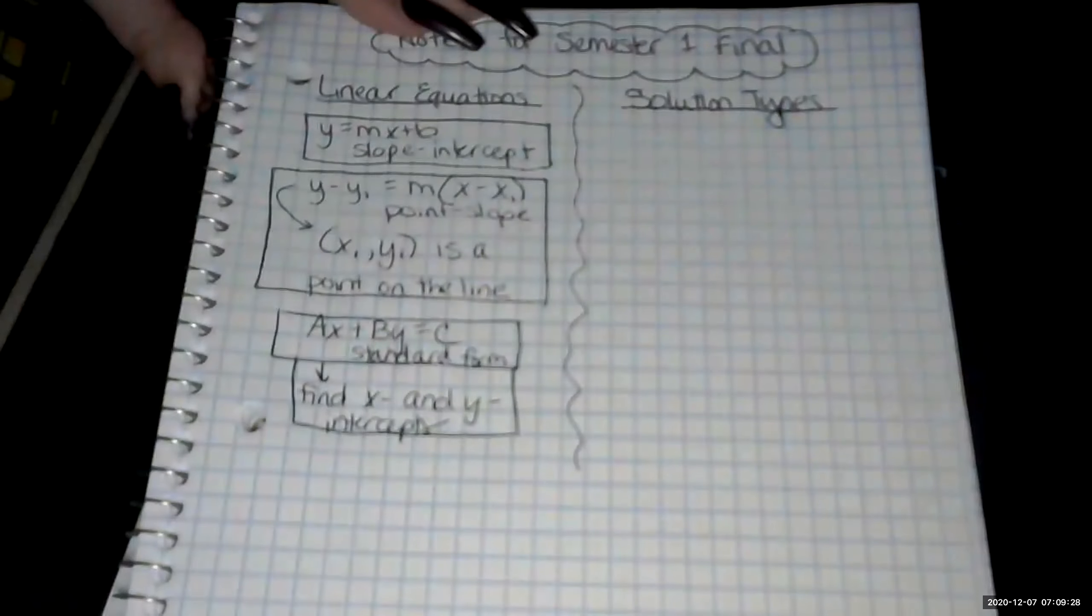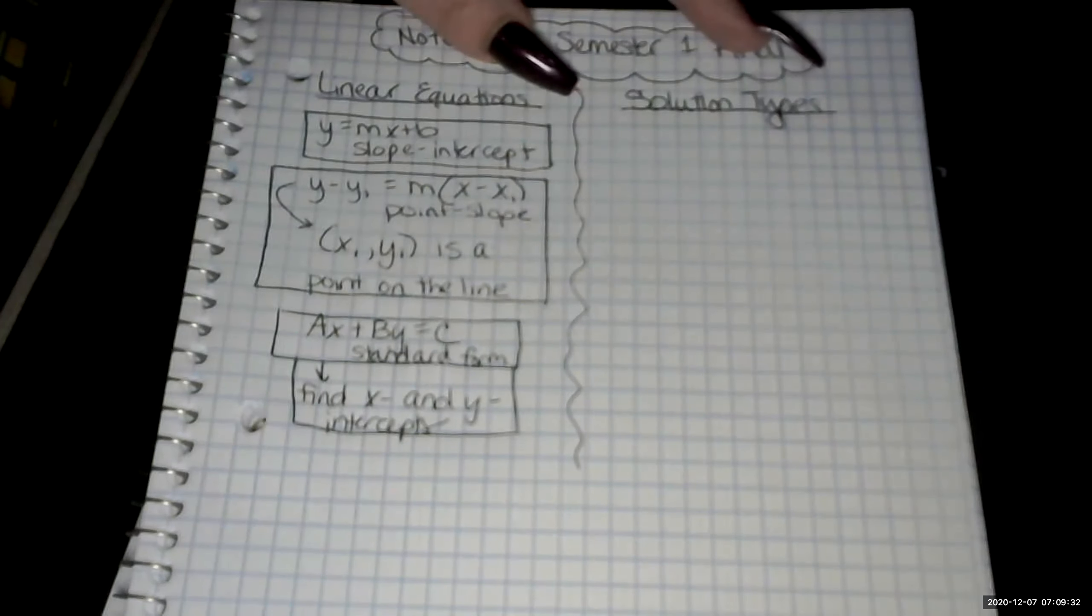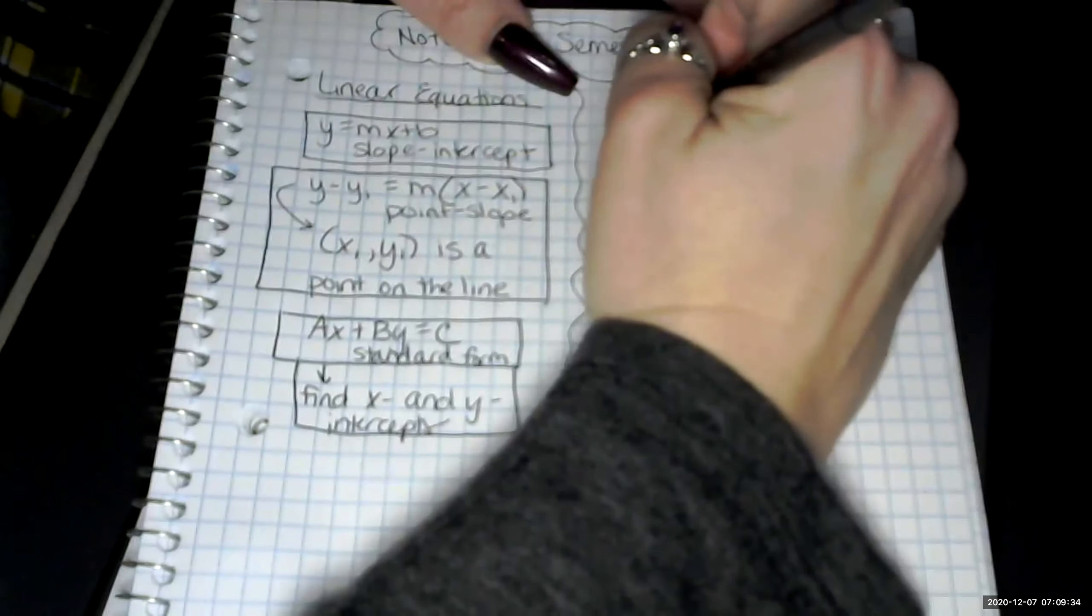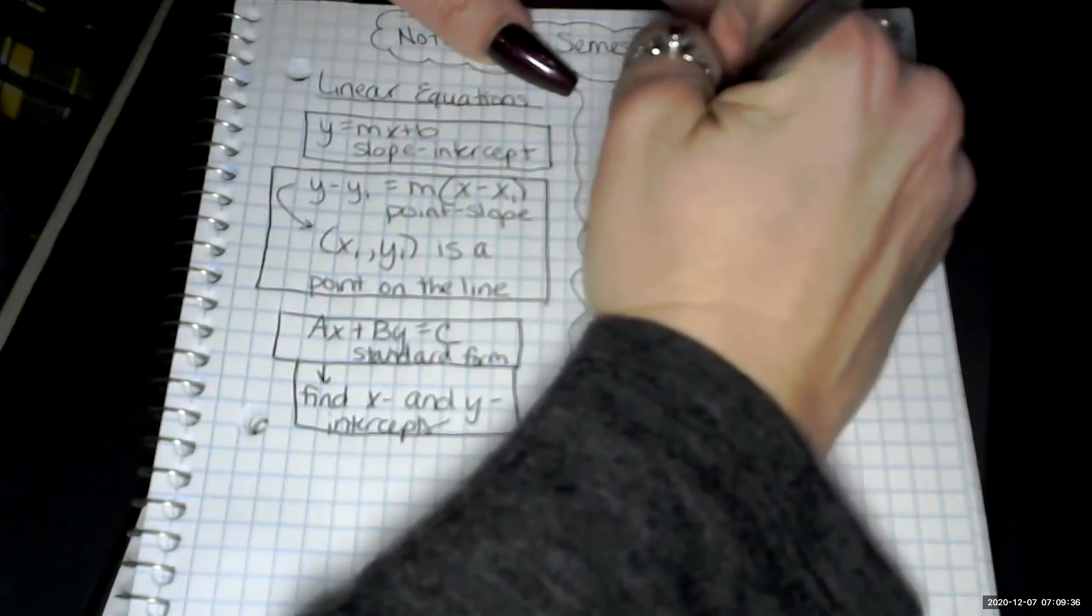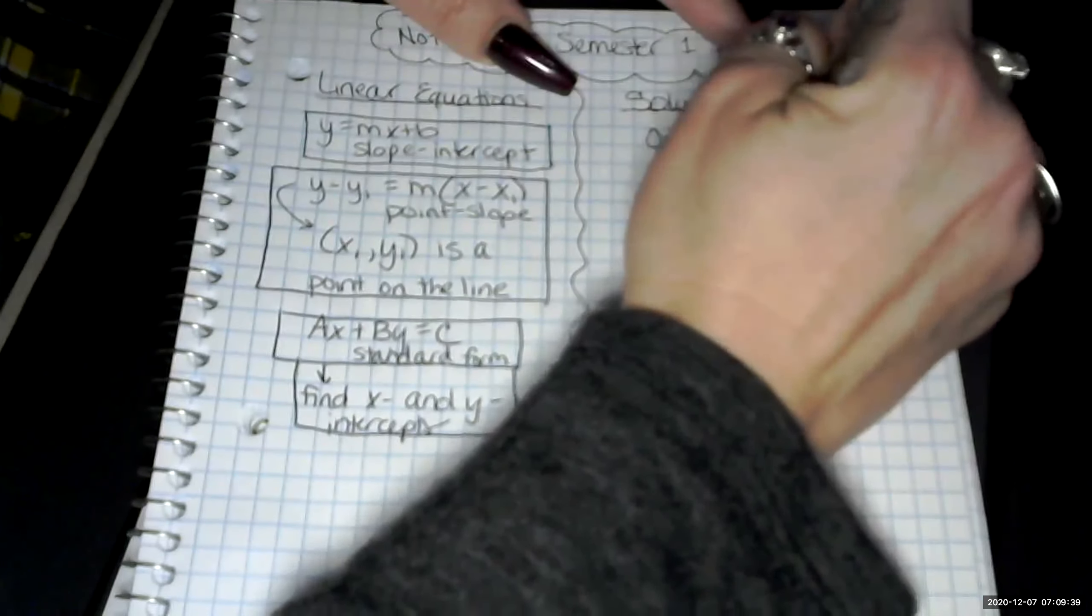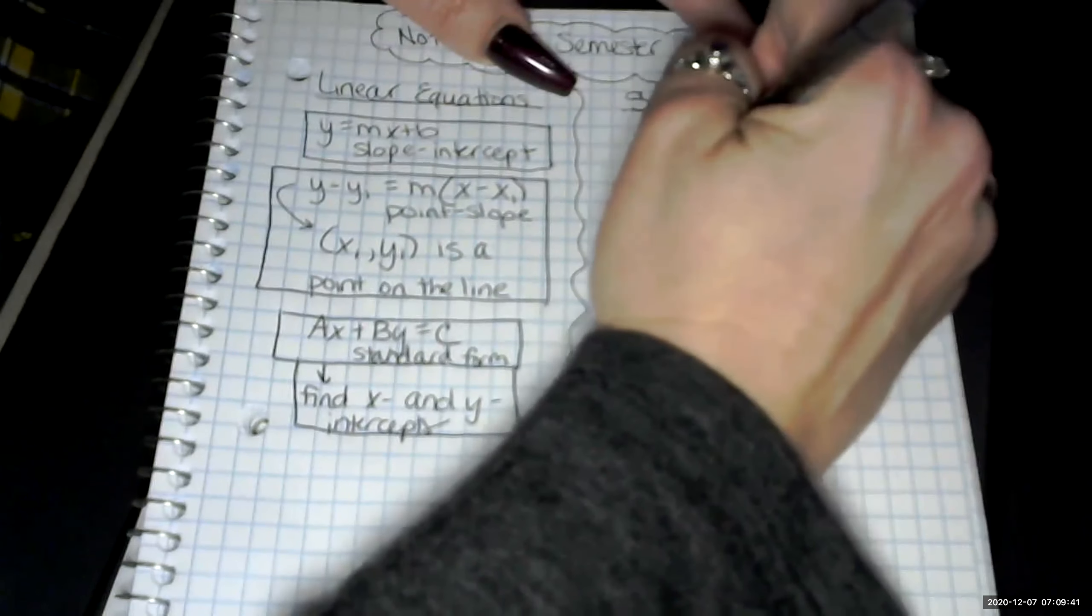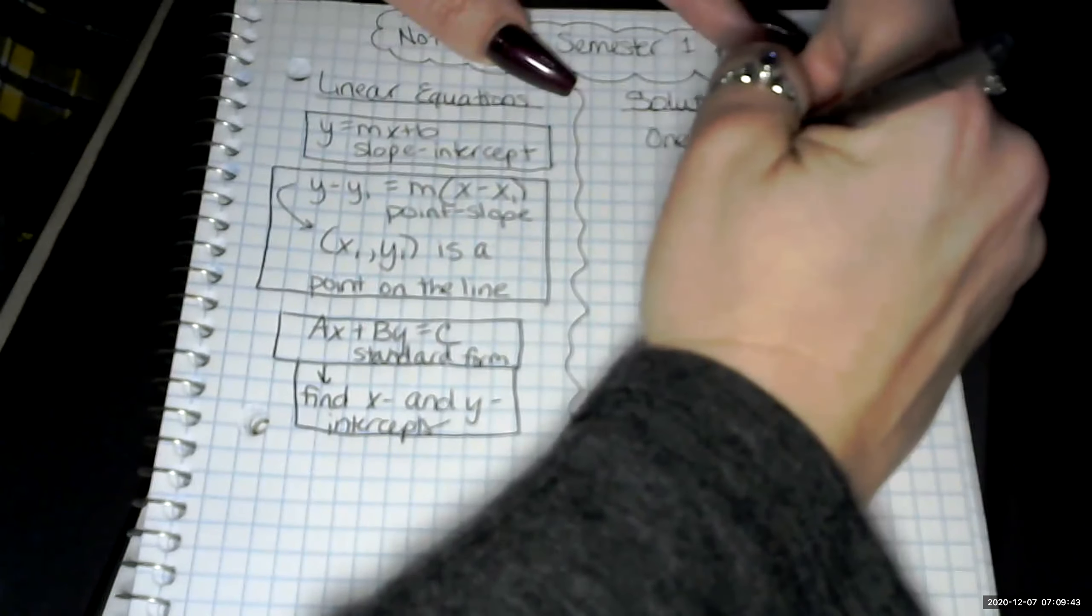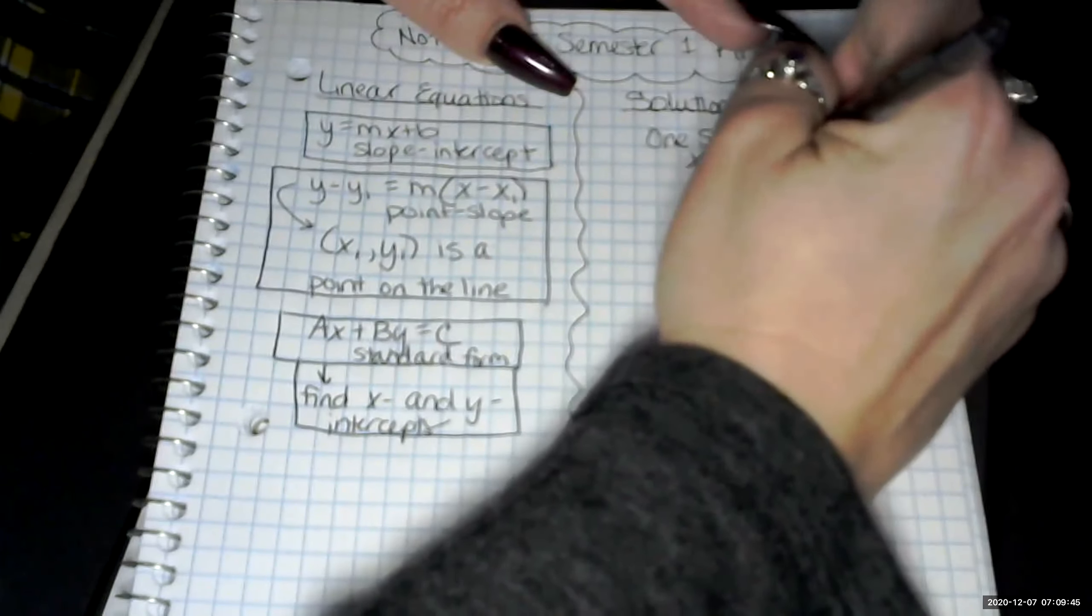Maybe we do a little squiggly going down to show that those are separate. And with solution types, we had one solution, which is what we'd normally work with. And that's when x equals one answer, one value.